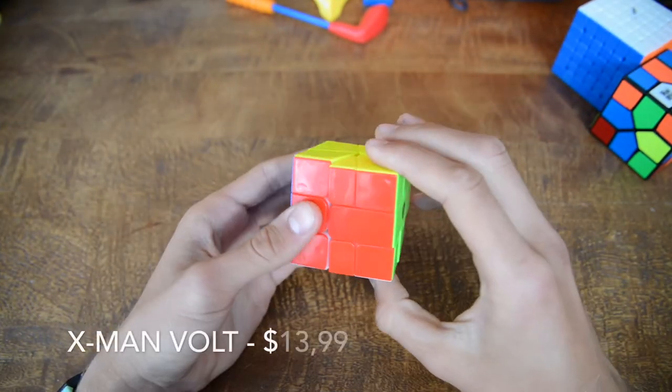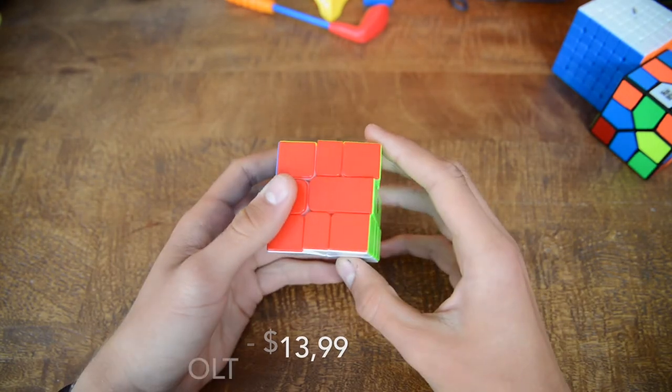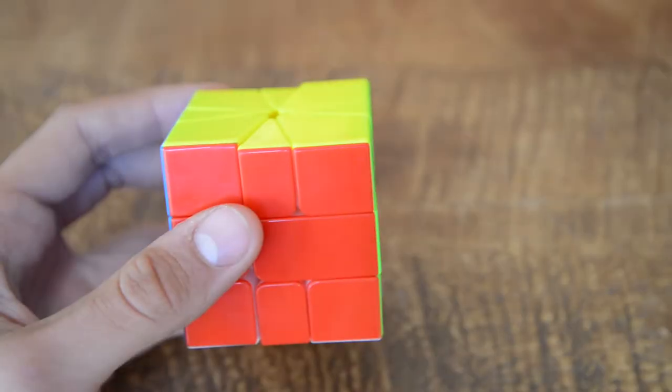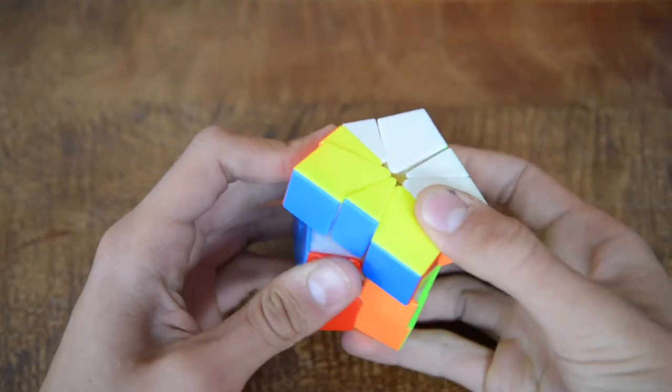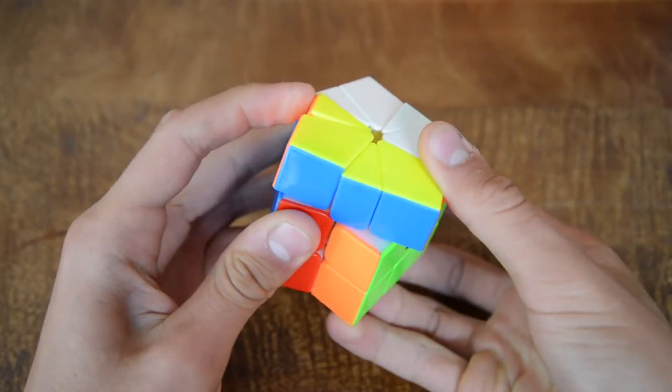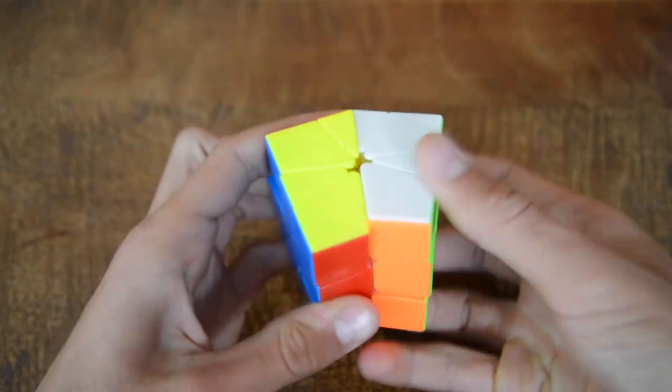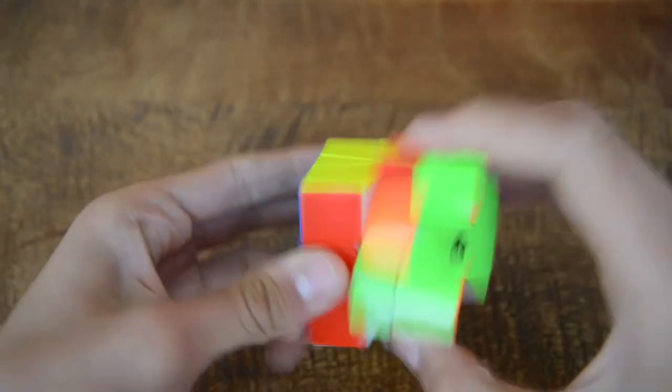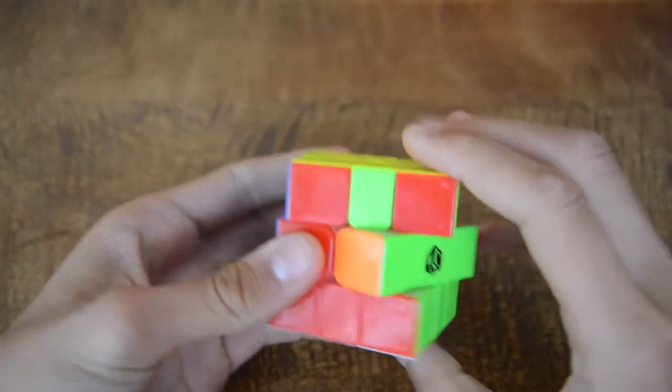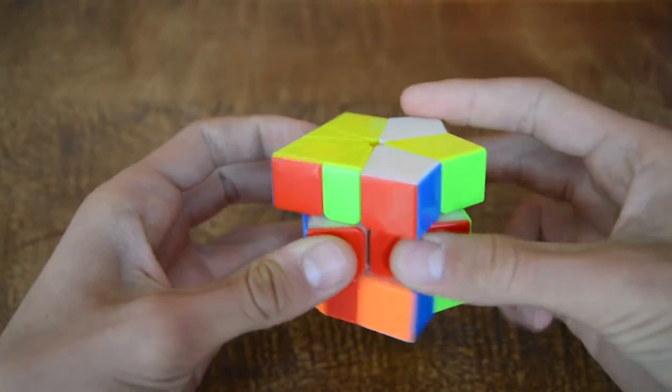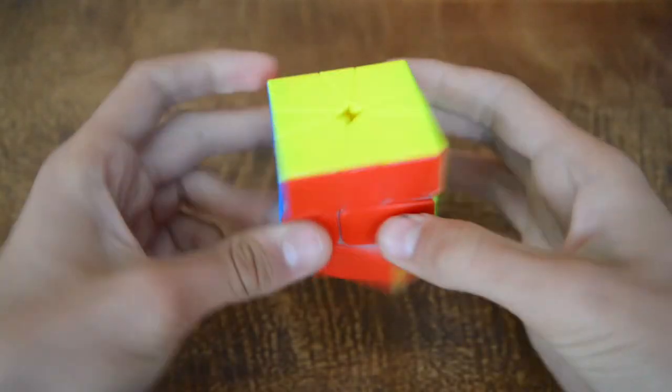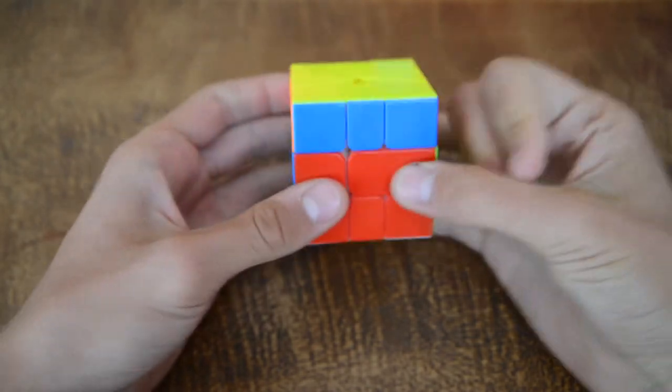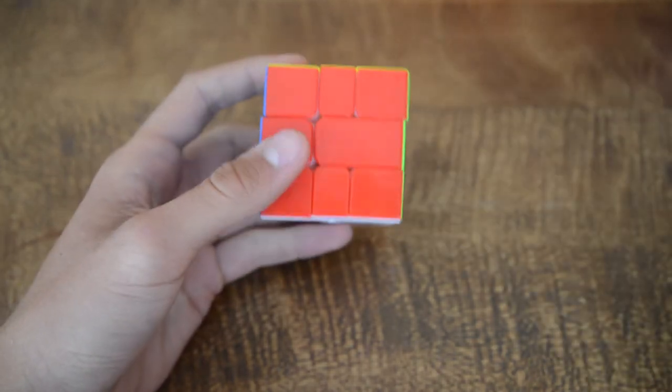So next up we have the Volt Square One. And I'm really disappointed in this puzzle. Because I've seen some really nice reviews out there about this puzzle. But, come on. It is so blocky. The corner cutting is bad. As you can see it's like 1mm. This is my new main. Although, I am not very pleased with this puzzle after all. Sometimes it locks up. And that is not very good. I will loosen it up a little bit. But I really hope it gets better. Because right now, I do not like it.